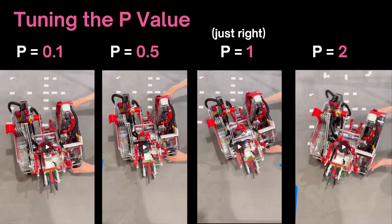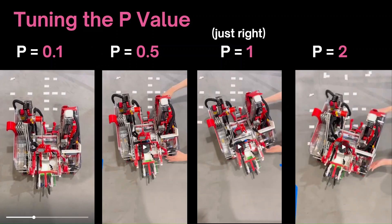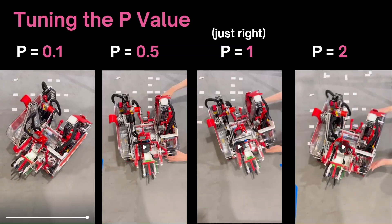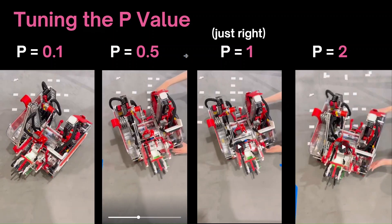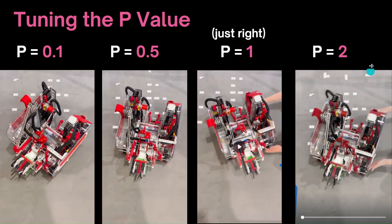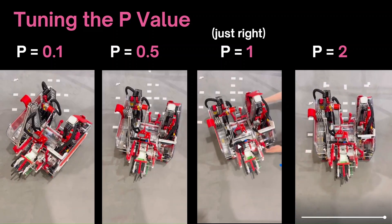We can first start with tuning the P-value. This will control how aggressively the robot turns back to its original heading. For example, if it's way too low, such as 0.1, then the robot will most likely not respond back when you turn it. This means that the P-value is too weak, and we can try increasing it. So once we increase it to 0.5, we notice that the robot is actually correcting back this time, except it's correcting back a little bit too slowly and a bit too weak. Trying to increase it to a higher value such as 2, this turned out to have more oscillations and overshoot while the robot was turning back, which is undesired.